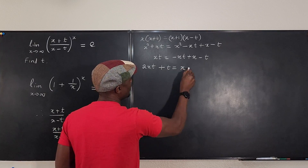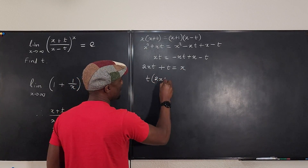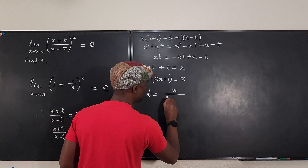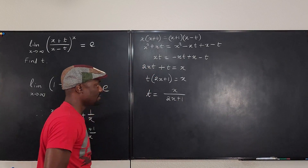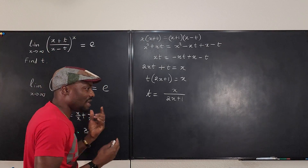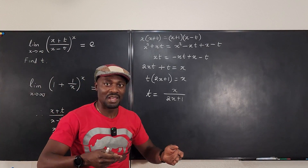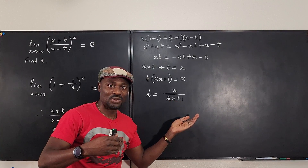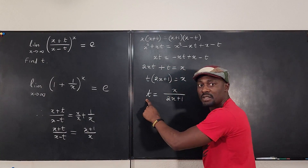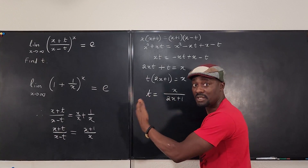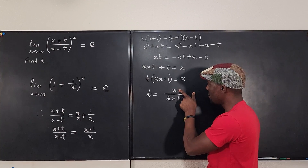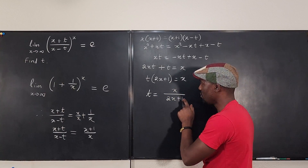Factoring out t gives t times 2x plus 1 equals x, so t equals x over 2x plus 1. Now, t is supposed to be a constant — a fixed number, not changing. But we've expressed t in terms of x. If I plug in zero, t is zero; if I plug in one, t is one third. So what value do we use?